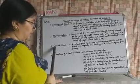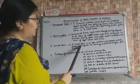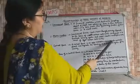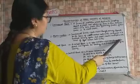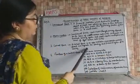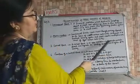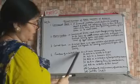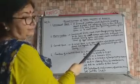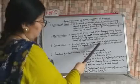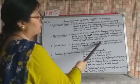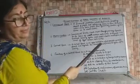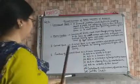Central bank: a central bank is an apex institution which operates, controls, directs, and regulates the banking and financial system of the country. You can say it is the topmost institution which decides price stability in the economy through monetary policy.